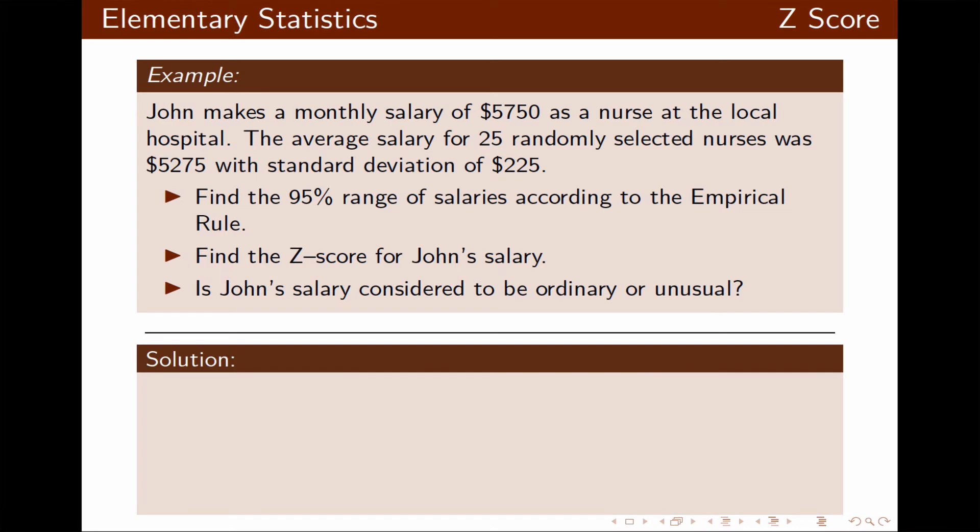To find the usual range by empirical rule, we use the formula of x-bar plus or minus 2s. Once you plug in the numbers and calculate, you get the usual range to be from $4,825 to $5,725.